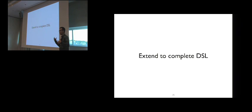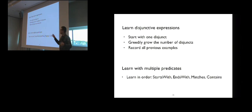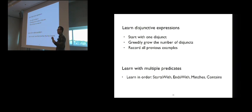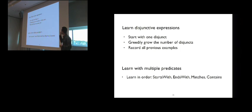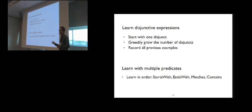Now we extend the algorithm to the complete DSL. There were two simplifications: no disjunction, and only one predicate type. To learn disjunctive expressions, we start with the simplified algorithm — which finds a single disjunct — and grow the number of disjuncts when necessary. To handle multiple predicates, we impose an ordering and learn each predicate type in order; the first predicate for which we successfully learn is used in the final program.